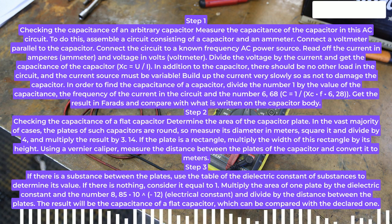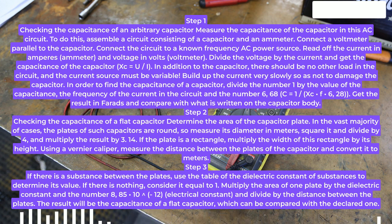In order to find the capacitance of a capacitor, divide the number 1 by the value of the capacitance, the frequency of the current in the circuit and the number 6.28. C equals 1 slash XC times F times 6.28. Get the result in farads and compare with what is written on the capacitor body.